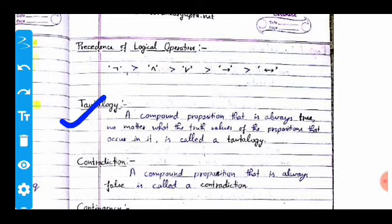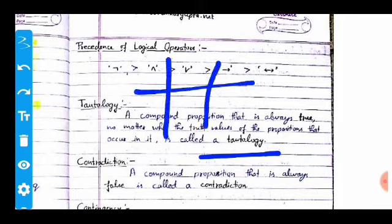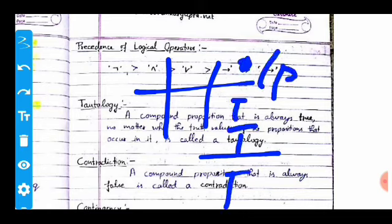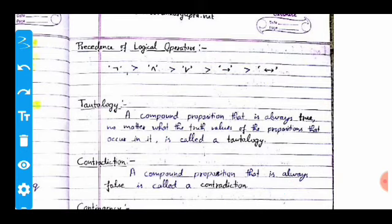Now let's look at tautology. A tautology is a compound proposition that is always true, no matter what the truth values of the propositions that occur in it. It is called a tautology when all outcomes in the truth table are true — the output is always true regardless of the inputs.